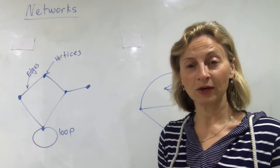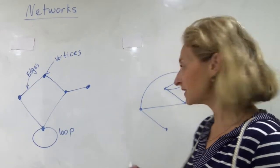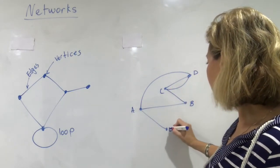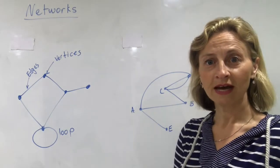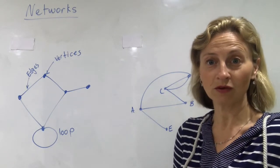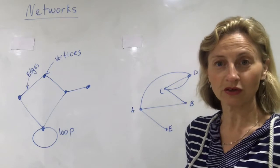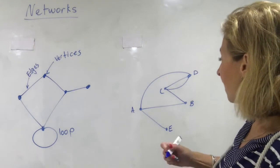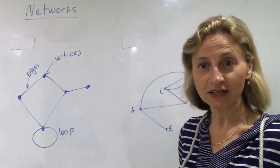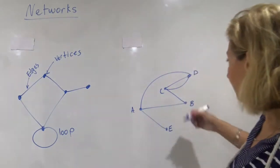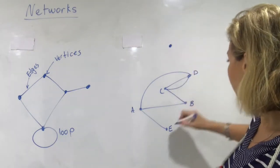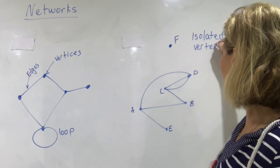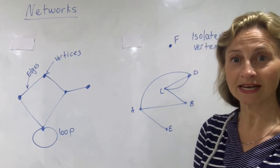It can be useful when doing questions to label the vertices — you can label them A, B, C, D and E. The order is not important unless the question has already given you letters on the vertices. If you have a vertex that is not connected to any other vertex in the network, such as a point F here, that would be called an isolated vertex. At the moment it's not connected to anything, so it's isolated.